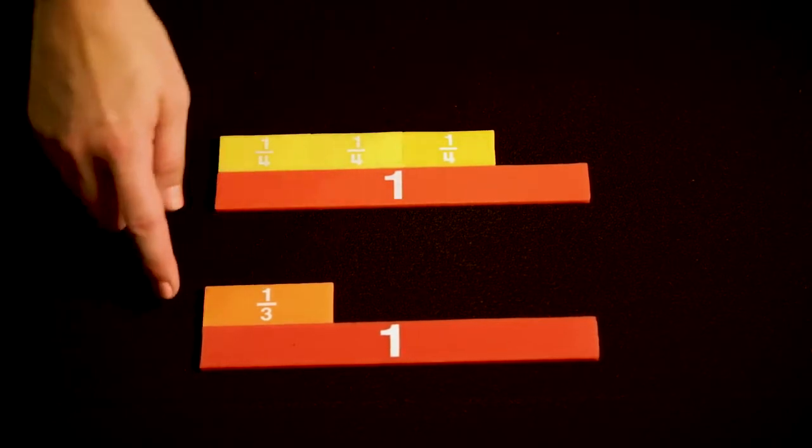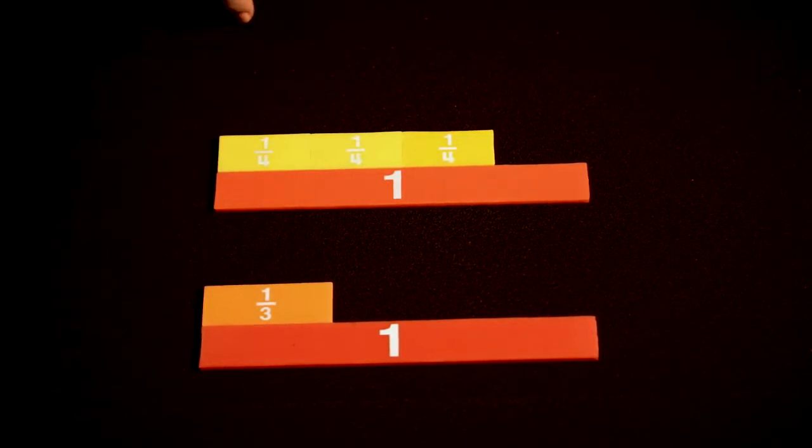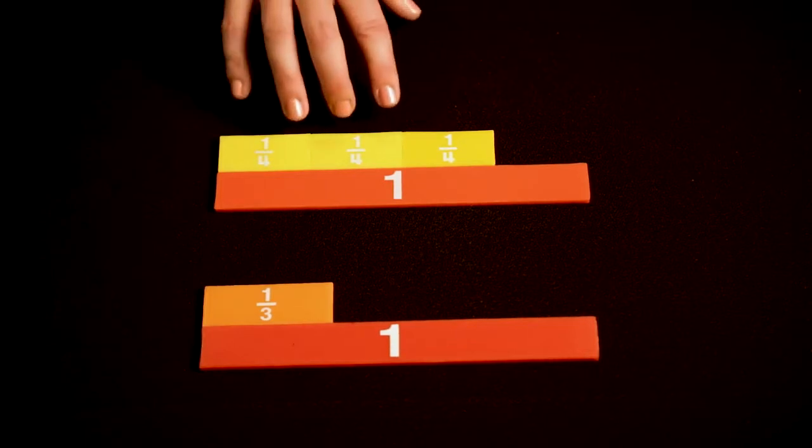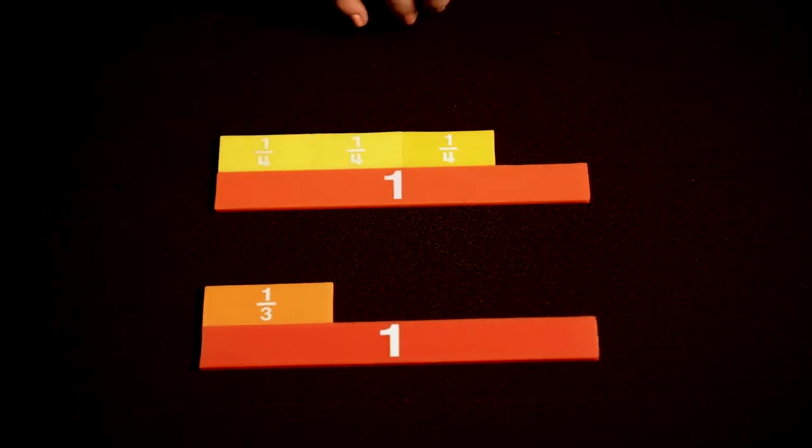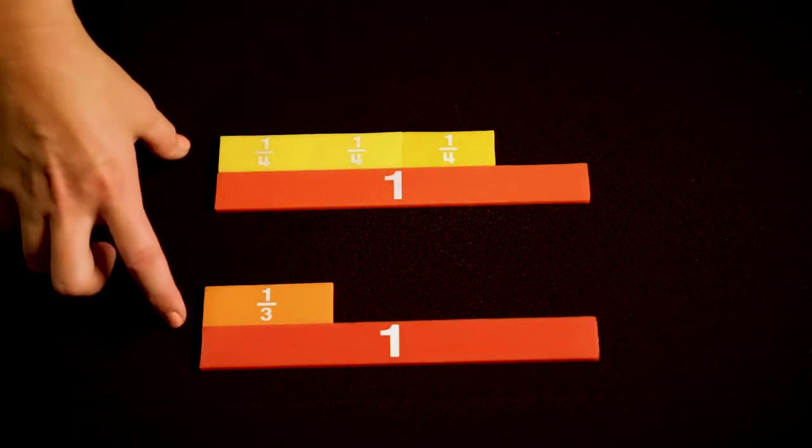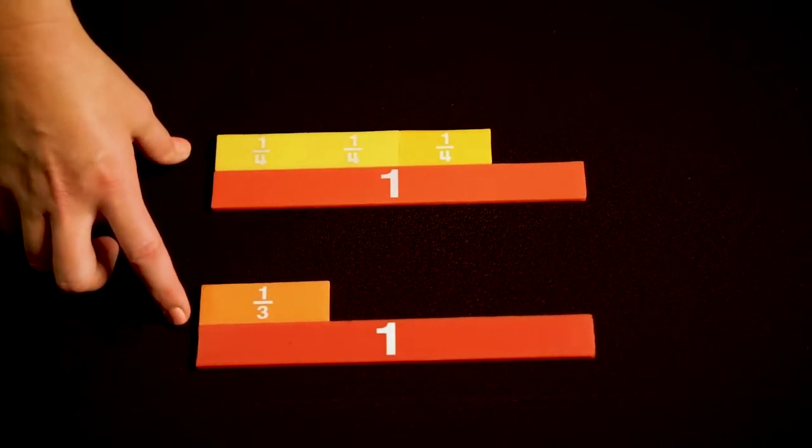So let's get these fractions to where they have the same denominator. When you list out the multiples, I know that 4 times 3 is 12, and 3 times 4 is 12, so our common denominator is going to be 12.